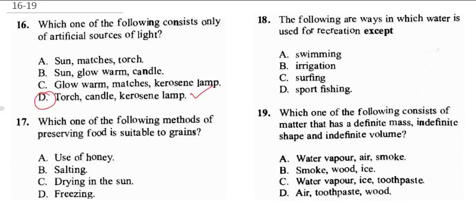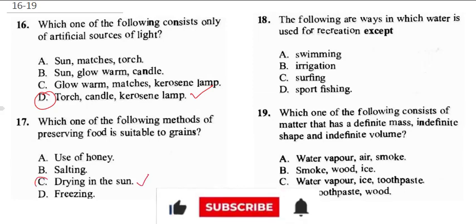Question 17 says: which one of the following methods of preserving food is suitable for grains? One of the best ways to preserve your grains is to dry them. When you dry grains in the sun, you preserve them. Salting does not do that, freezing will spoil it, and use of honey can also spoil it. So the correct answer is drying in the sun.